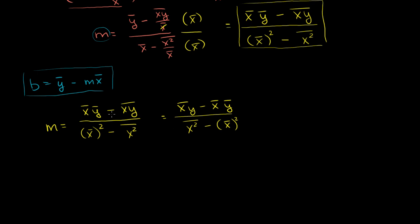These are obviously the same thing — you're just multiplying the numerator and the denominator by negative 1, which is the same as multiplying the whole thing by 1. Whatever you get for m, you can substitute back in to get your b. Your b is going to be equal to the mean of the y's minus m times the mean of the x's.